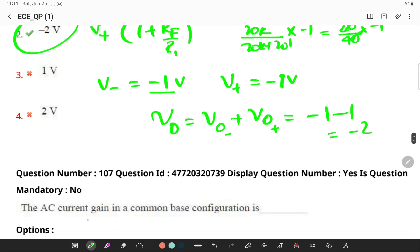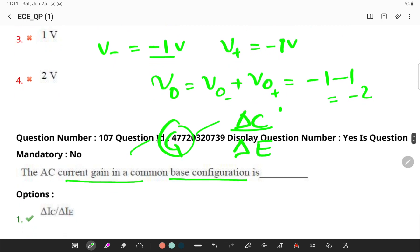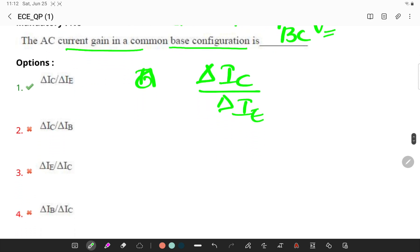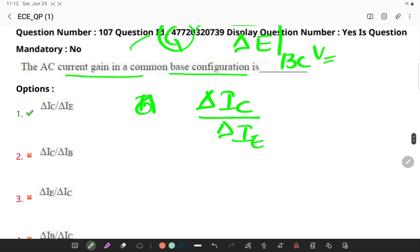Next, the AC current gain in a common base configuration. Remember, the current gain of a common base configuration is defined as the change in collector current divided by change in the emitter current when the base to collector voltage is constant. I can simply write delta IC by delta IE, which is my common base current gain.